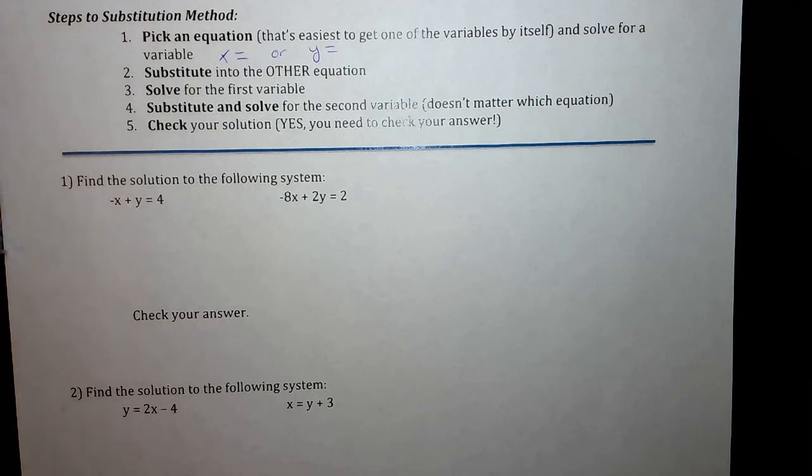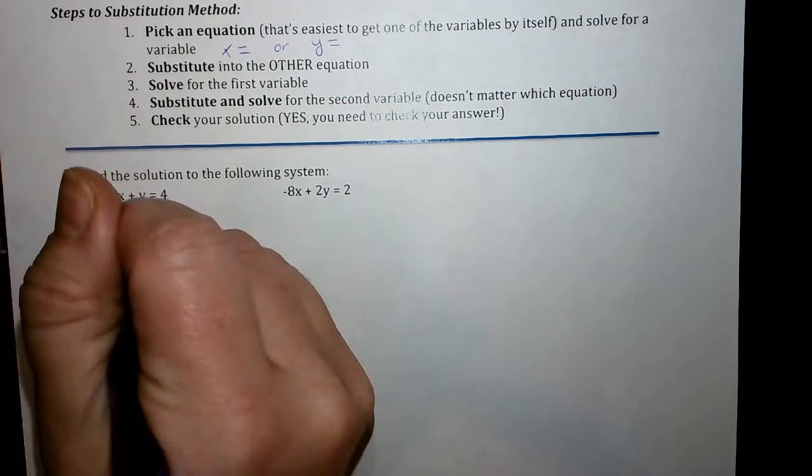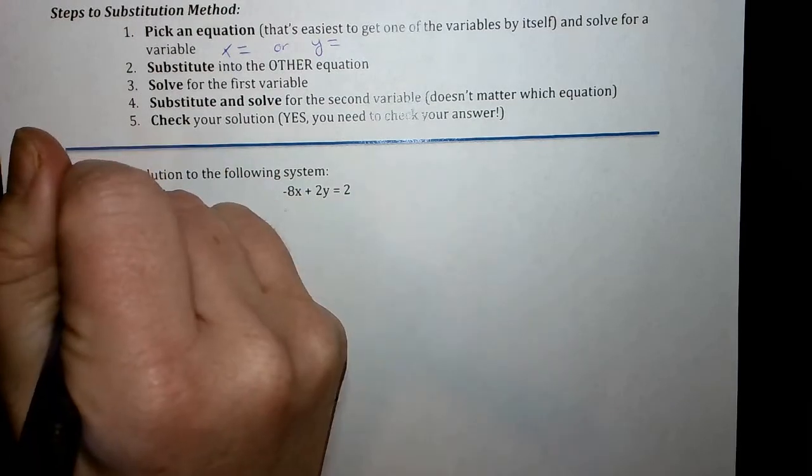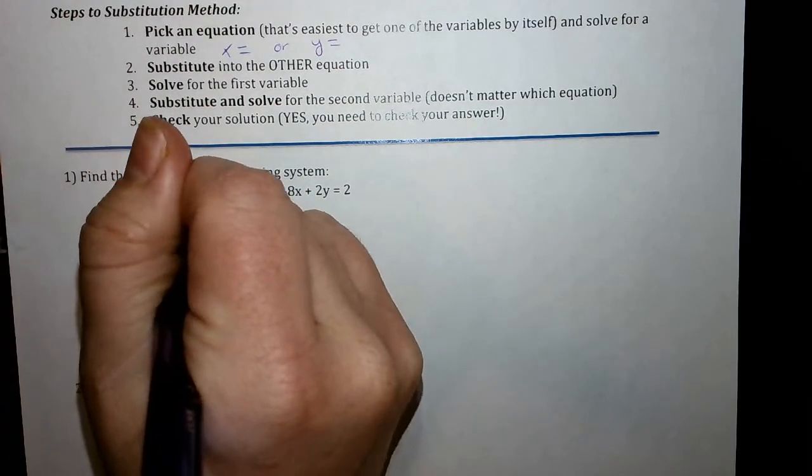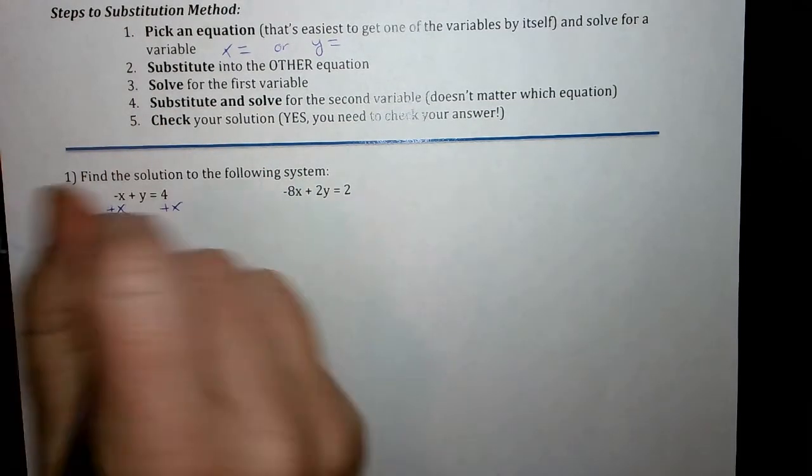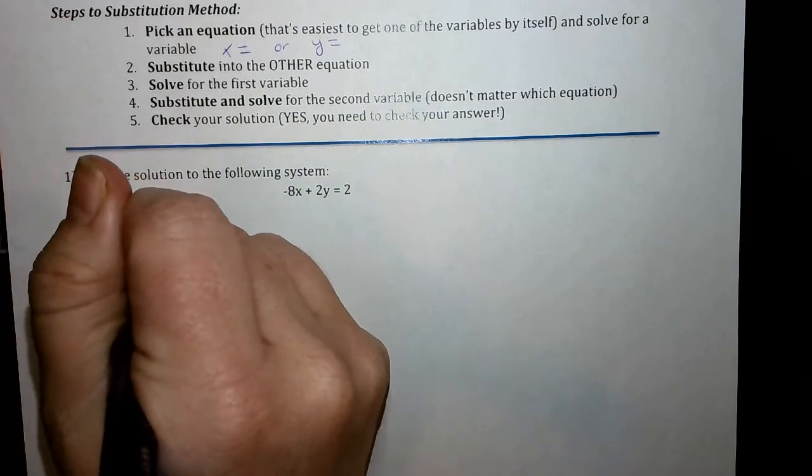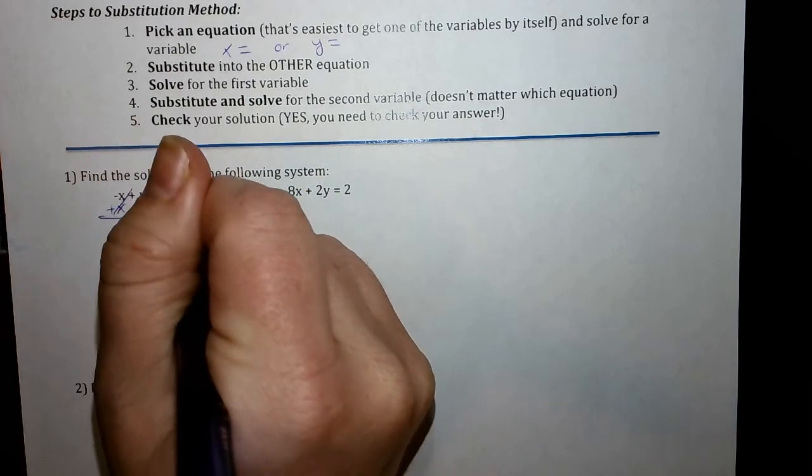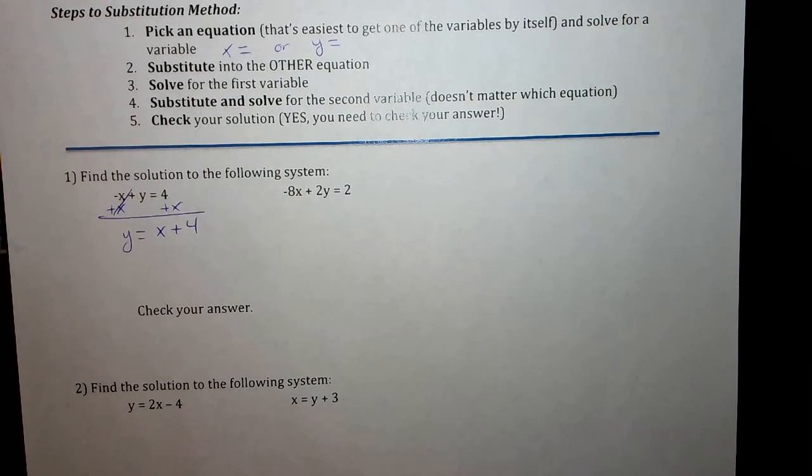So with that all said, let's get started. So I changed the first equation around so that I'm going to go with y equals. Since this is negative x, I'm going to add x to both sides. So this equation is going to become y equals x plus 4 or 4 plus x. Either one works.